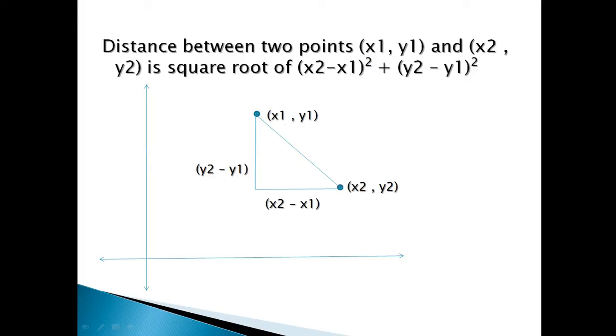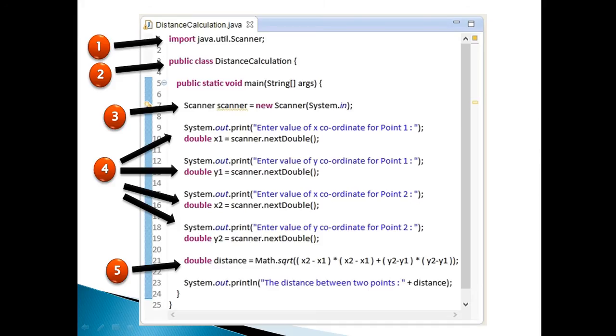The formula for calculation of distance between two points (x1, y1) and (x2, y2) is square root of [(x2 - x1)² + (y2 - y1)²]. Here, let's move ahead and discuss how to code a Java program which can calculate distance between two points.